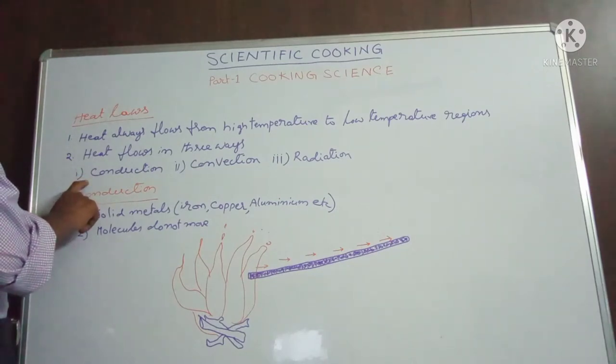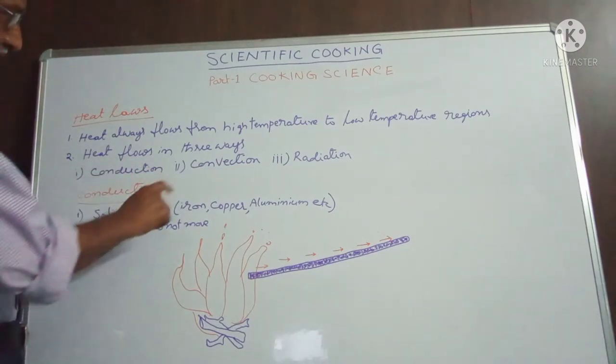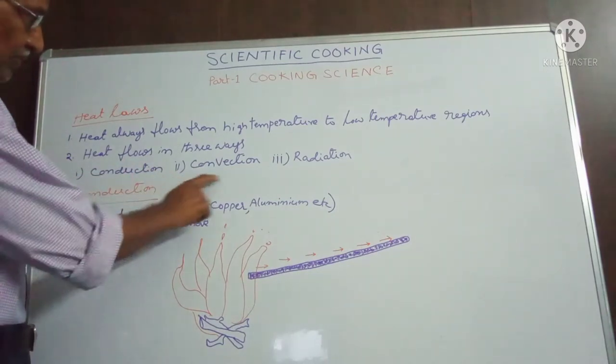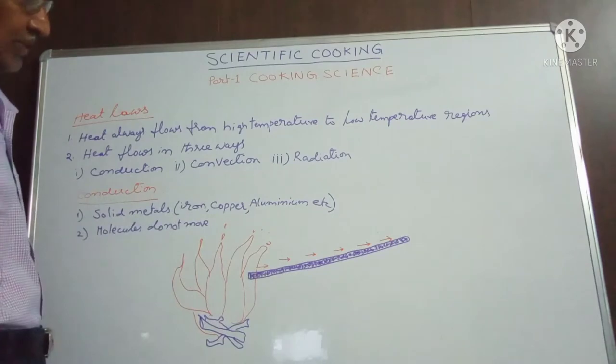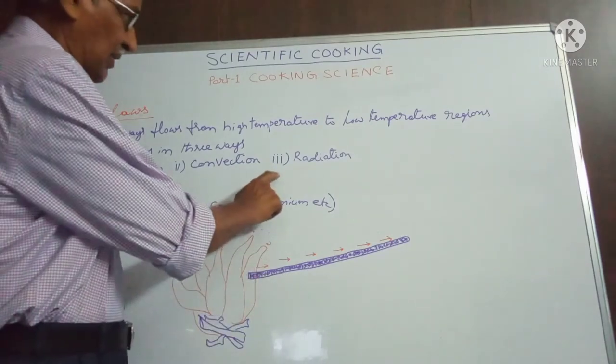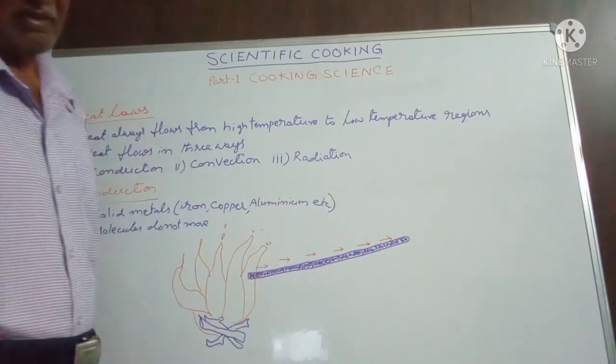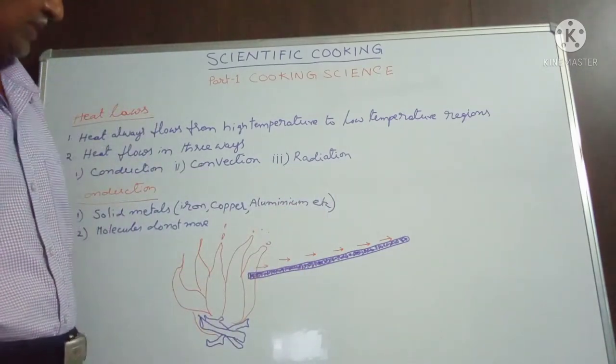Heat flows in three ways. Number one: conduction of heat. Number two: convection of heat. And number three: radiation of heat.